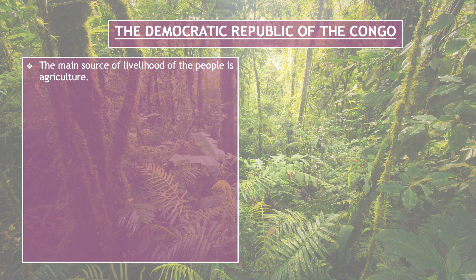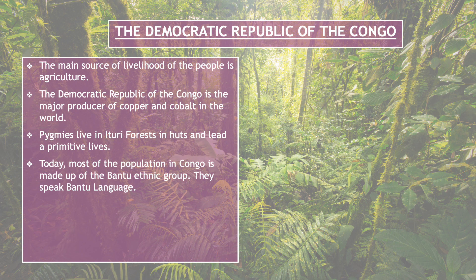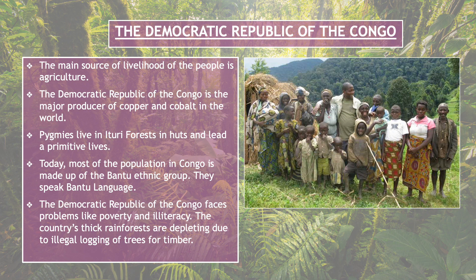The main source of livelihood of the people is agriculture. The Democratic Republic of the Congo is a major producer of copper and cobalt in the world. Pygmies live in the Ituri forest in huts and lead a primitive life. Today, most of the population in Congo is made up of the Bantu ethnic group, who speak the Bantu language. The Democratic Republic of the Congo faces problems like poverty and illiteracy, and the country's thick rainforests are depleting due to illegal logging of trees for timber.